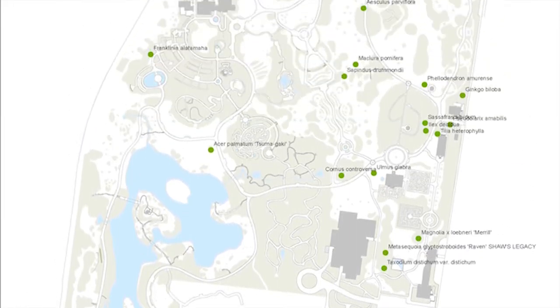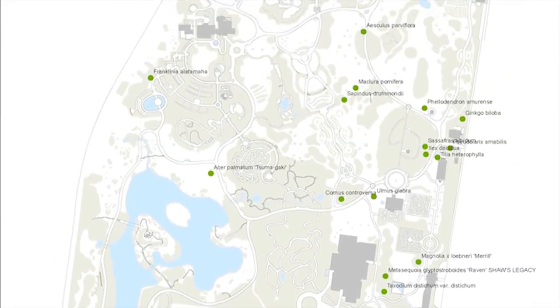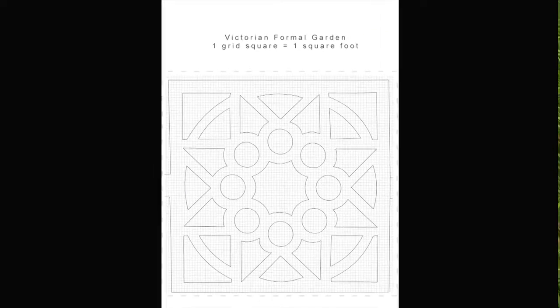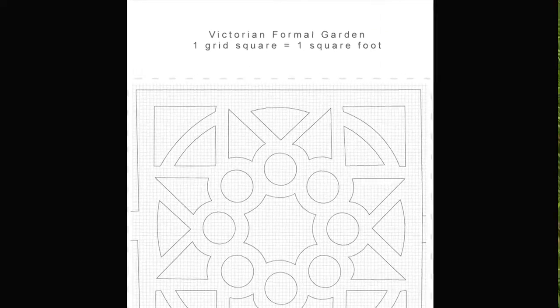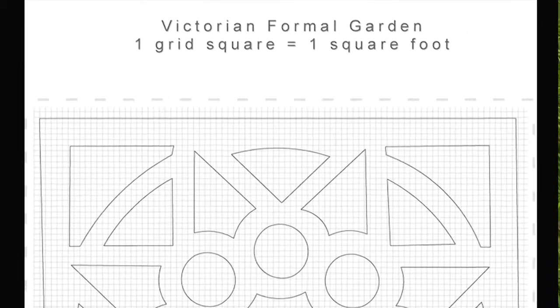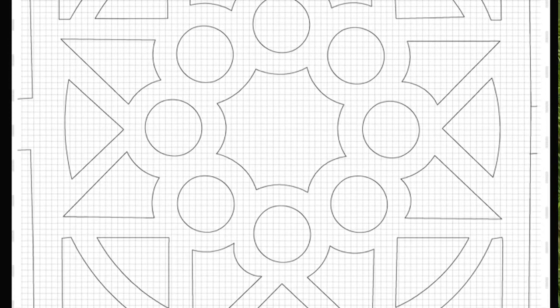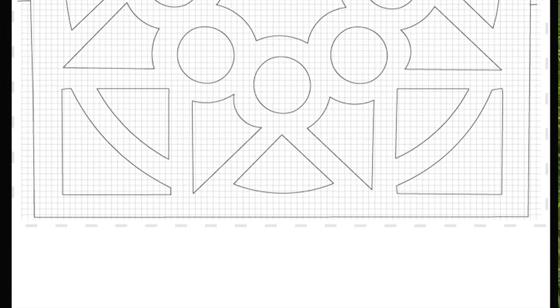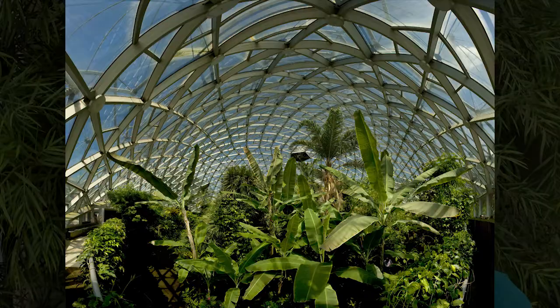A horticulturist might want to create a new design for an area, and we can create a map that has all of the hardscape features and maybe some of the larger plantings that need to stay where they are. Then we can overlay a grid so they can use that to get an idea of scale and how many plants would fit in a certain area.